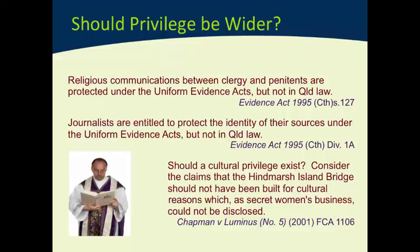The second relates to journalists. Journalists quite often get information from anonymous sources, or sources who provide information on the condition that the source not be made public — for instance, where they might be sacked or subject to retribution if it became known they were the source. Under the Commonwealth Evidence Act, journalists are entitled to protect the identity of their sources. Under Queensland evidence laws, they have no such protection. Do you think that protection should be extended to journalists to allow them to keep their sources secret?